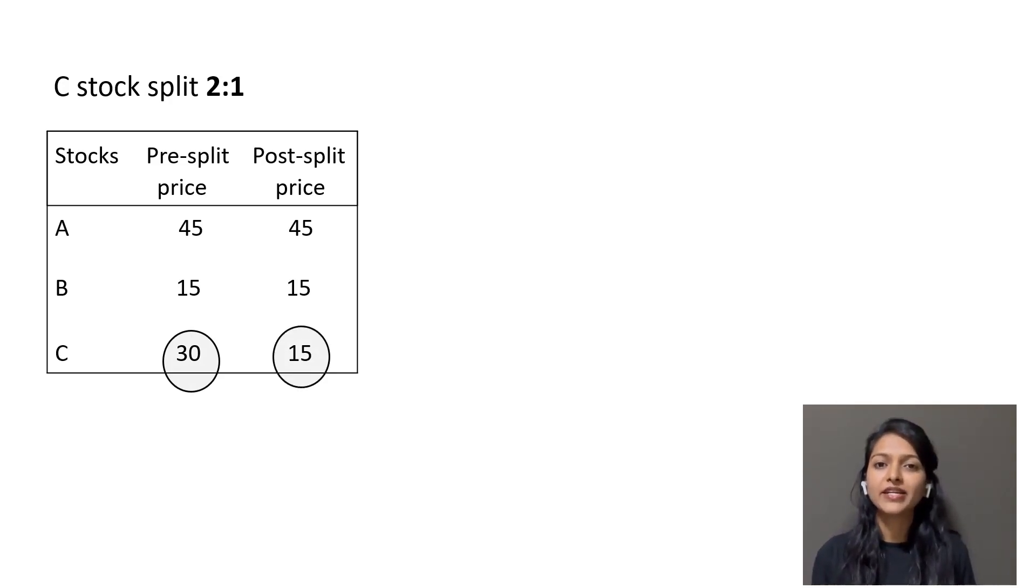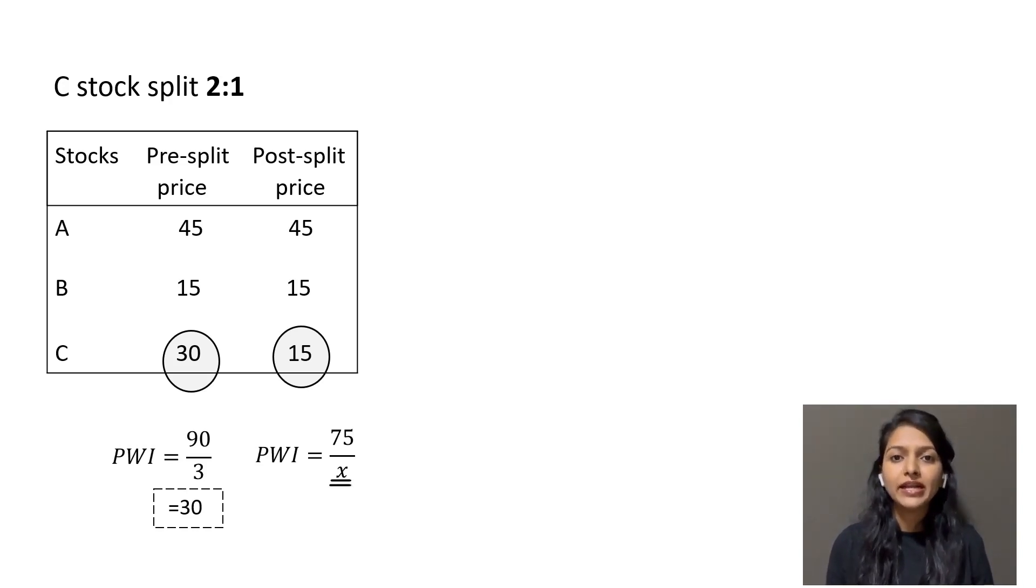Now calculating the index value for stock splits, its pre-split value remains the same because there was no change in any of the stocks. In the case of post-split, the divisor has to be adjusted so that the index value remains the same before and after the split.